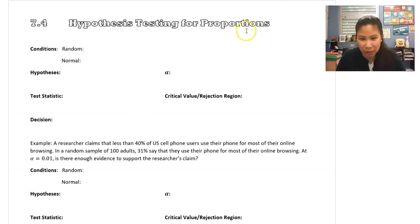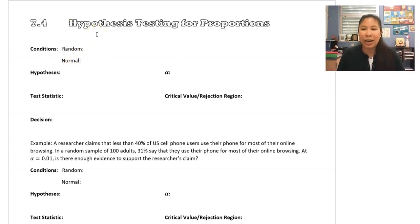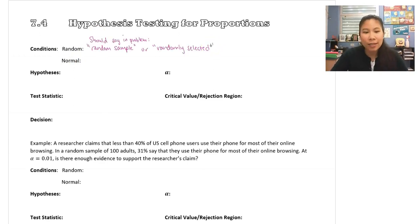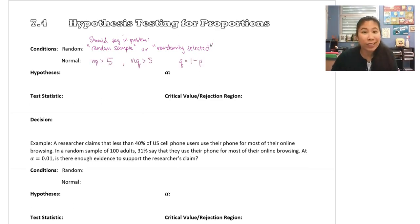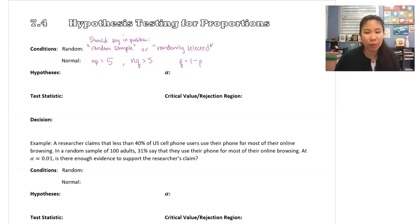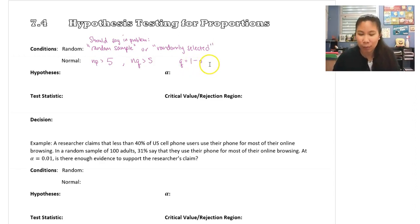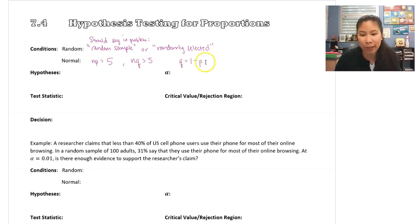When we're dealing with proportions, the normal part changes. For random, we're still looking for whether it says random sample or randomly selected. But for normal, instead of checking whether it says normally distributed in the problem, or for sample size n to be greater than 30, when we're dealing with proportions, we have to check that n times p is greater than 5, and n times q also has to be greater than 5. Q, if you remember, is the opposite proportion — we find it by doing 1 minus whatever p is. Since they're proportions, they should be decimals, and that's why we do 1 minus whatever that decimal is.